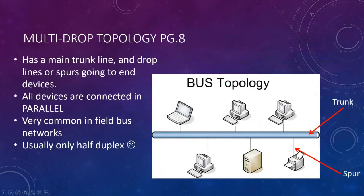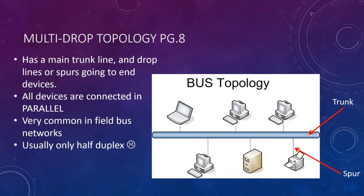Multi-drop topology has a main trunk line with drop lines or spurs going to the end devices — we've talked about nothing else for the last couple of days. For example, Foundation Fieldbus has a maximum spur length of six meters. All devices are connected in parallel, which is important: a wire break in a parallel circuit can only affect one device. This topology is most common in field bus networks, and the downside is it's usually only half duplex.